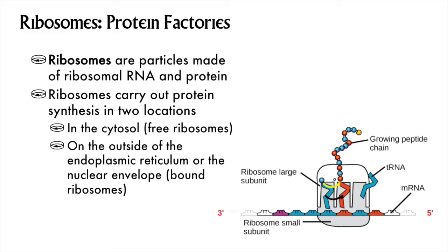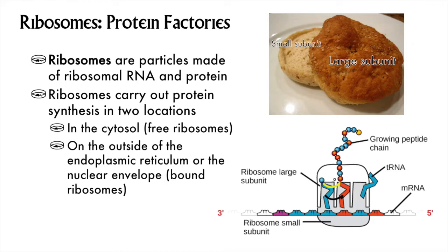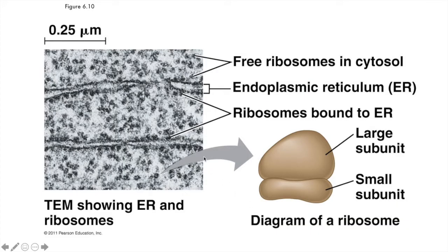Ribosomes are where messenger RNAs are decoded to make proteins. This is where the peptide bonds are formed and water is released. The ribosomes themselves are made out of RNA molecules and protein, and they have two parts: a large subunit and a small subunit — they remind me of hamburger buns. Ribosomes may be floating in the cytoplasm, or they may be attached to parts of the endomembrane system, like the nuclear envelope or the ER. The same ribosome can go back and forth between being bound and free, depending on the polypeptide they're making at the time.